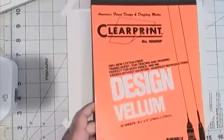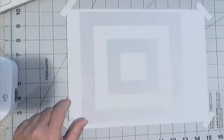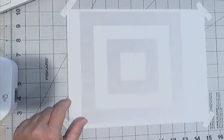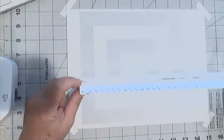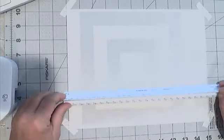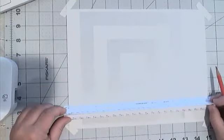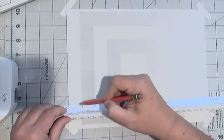So when you do a title block, it doesn't matter if it's in portrait or landscape. We always focus on having the binding edge, the left-hand side, be on the left side because that's how we read in the United States. So I'm going to take my architectural scale. And on the 16 blade, that is the same as a schoolhouse ruler that we all grew up with. And so I'm going to mark first my binding edge. I'm just going to get some small guideline marks.